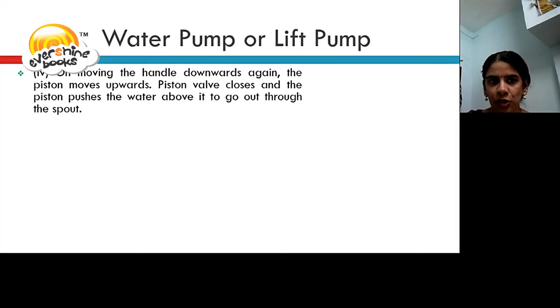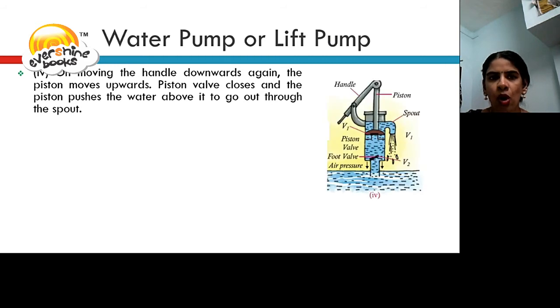In position 4, on moving the handle downwards again, the piston moves upwards. Piston valve closes and the piston pushes the water above it to go out through the spout.